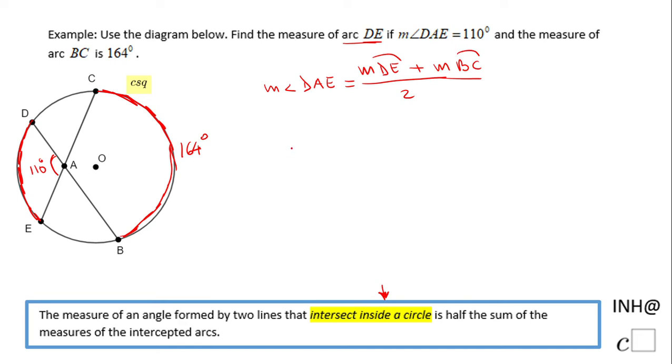So angle DAE is 110, given to us. Arc DE, that is the one we need to find out, so I'm going to call it x. Arc BC is given to us as 164 degrees, over 2.